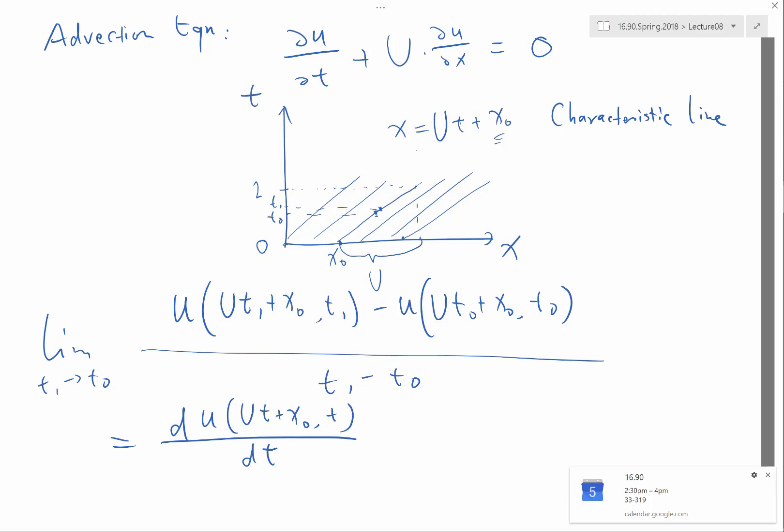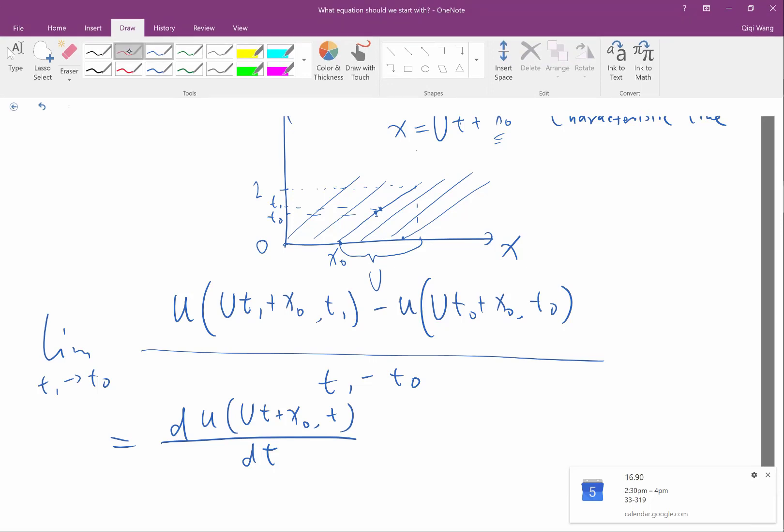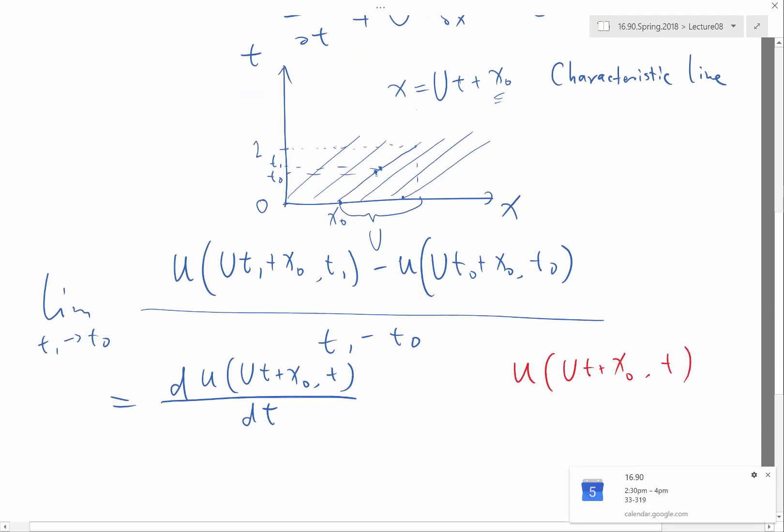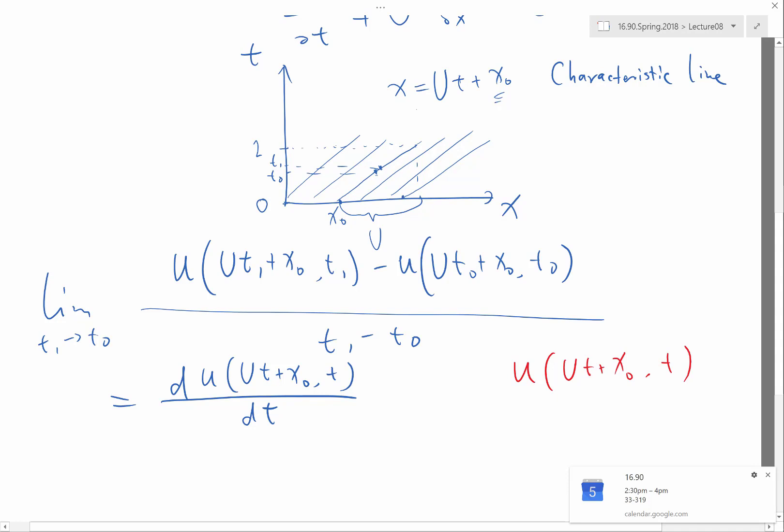Why is it a total differential instead of a partial? Because if I wrote down this, okay so if I just look at this thing, u of ut plus x0 and t, this is a function of what variables? Only t. Only t, right.